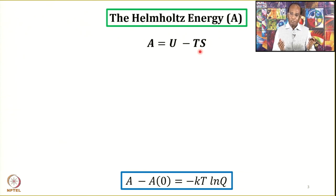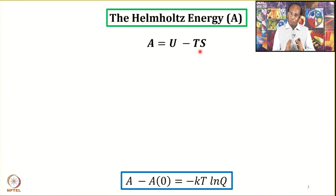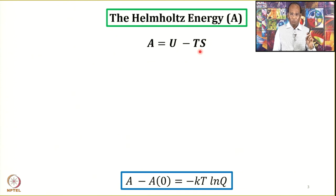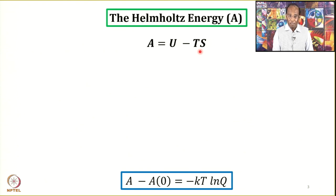U and TS are system properties, therefore A, the Helmholtz energy, itself becomes a system property. Before we derive the expression for pressure, we will first derive the expression between Helmholtz energy and canonical partition function, because pressure can be connected with Helmholtz energy or changes in Helmholtz energy.